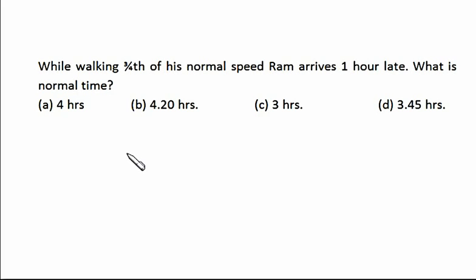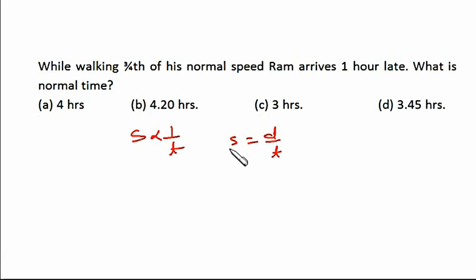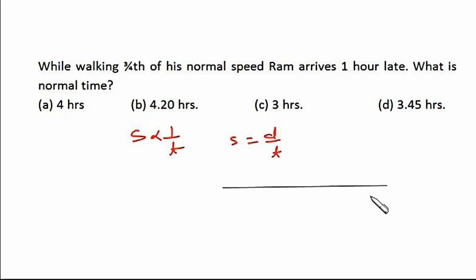Let's see this interesting question: while walking three-fourth of the normal speed, Ram arrives one hour late. What is the normal time to cover that particular distance? The logic here is that speed is inversely proportional to time — speed equals distance divided by time. If distance is constant, if speed is increased, time will be decreased.